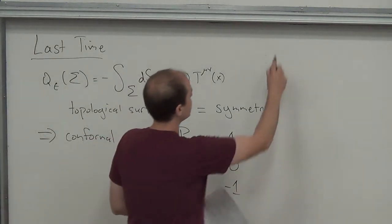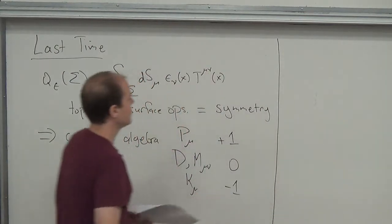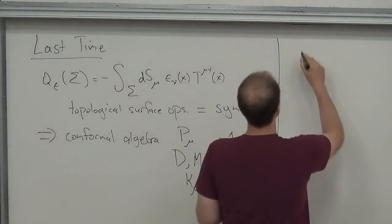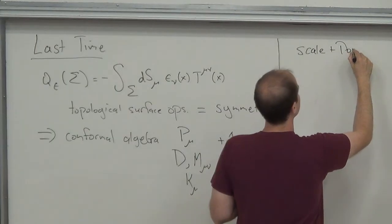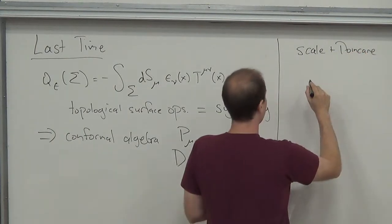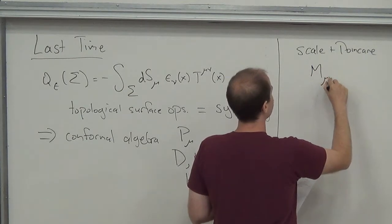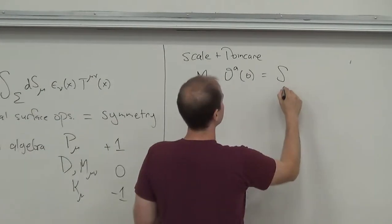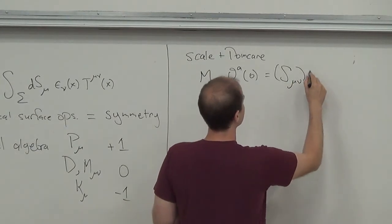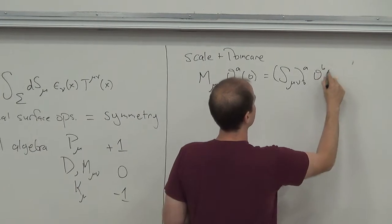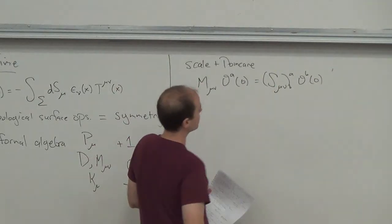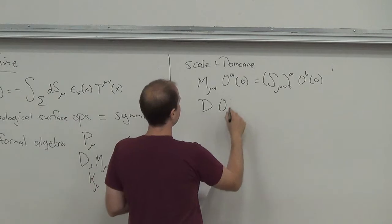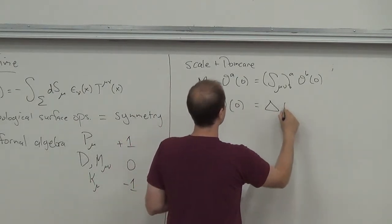We started the project of using these symmetries to classify the operators in the theory. So far, we've used scale and rotation symmetry. In particular, we demanded that our operators transform in irreducible representations of SO(D). An operator at the origin gets acted on by some finite-dimensional matrix depending on the spin. For a scalar, this is just zero. We also diagonalized the action of the dilatation operator with some eigenvalue delta.